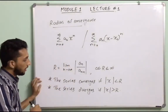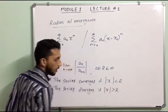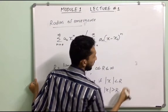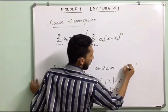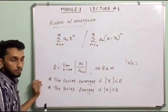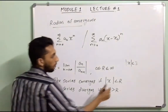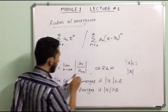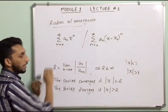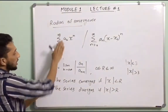This power series converges if |x| < R, and diverges if |x| > R. For example, if R = 3, the series converges when |x| < 3, and diverges when |x| > 3. This is the idea of the radius of convergence.